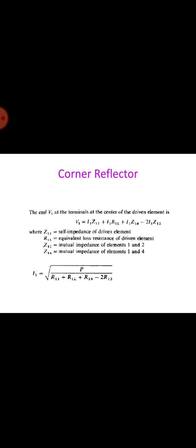The value of emf v1 at the center of the driven element is given by v1 equals i1 times z11 plus i1 times r1l plus i1 times z14 minus 2 i1 times z12. Where z11 is the self impedance of the driven element, r1l is the equivalent loss resistance of driven element, z12 is the mutual impedance of elements 1 and 2, and z14 is the mutual impedance of elements 1 and 4.